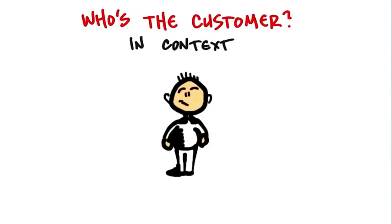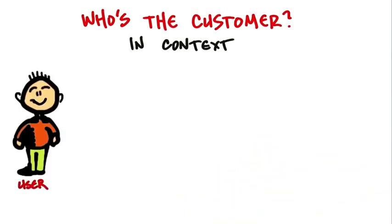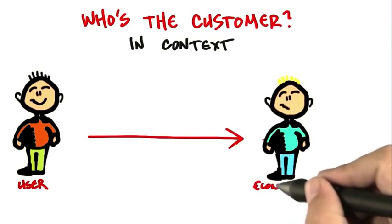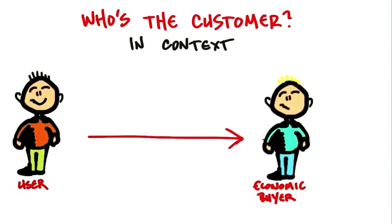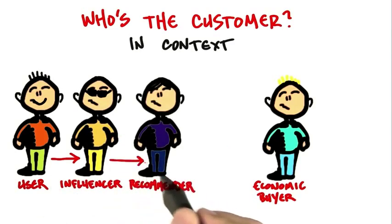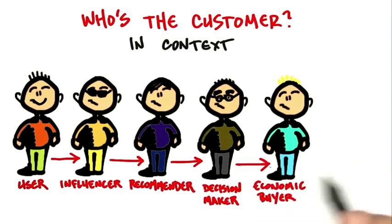In corporations, it's pretty easy to understand that you might have someone who uses the product, but they might not be the person who pays for the product. There might be someone up here — the payer — let's give them a fancy name and call them the economic buyer. So we might be buying software for accounting to use, but it might be the chief financial officer who has to sign off for that.